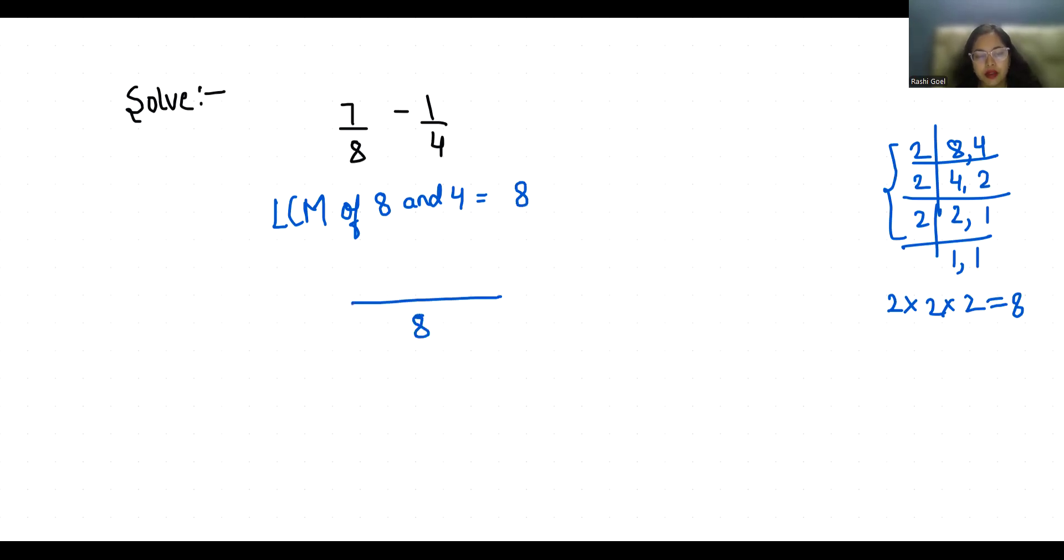Now write the LCM in the denominator. Write the numerator with a multiply sign and check in the denominator how many times the LCM comes. So in table of 8, 8 comes at 1st place, so multiply by 1.